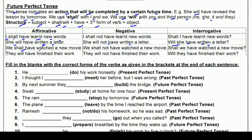We shall have watched a new movie — हम एक नई movie देख लेंगे। We shall not have watched a new movie। Shall we have watched a new movie? They will have finished their work — वे अपना काम finish कर लेंगे। They will not have finished their work। Will they have finished their work? इस तरह हमने Present Perfect, Past Perfect और Future Perfect Tense जाना।